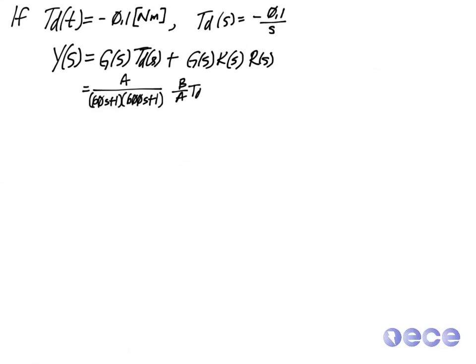That is, I have A over 60S plus 1 times 600S plus 1, that's my plant G of S. My input TD of S is multiplied by B over A, that's the gain that showed up in our open loop diagram. And then we still have to multiply G of S times R of S times K of S over on the right hand side.